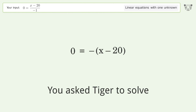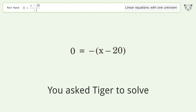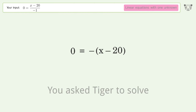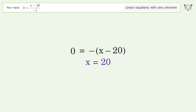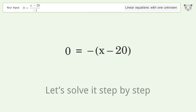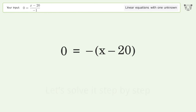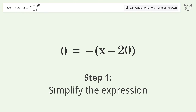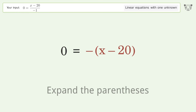You ask Tiger to solve this — it deals with linear equations with one unknown. The final result is x equals 20. Let's solve it step by step: simplify the expression, expand the parentheses.